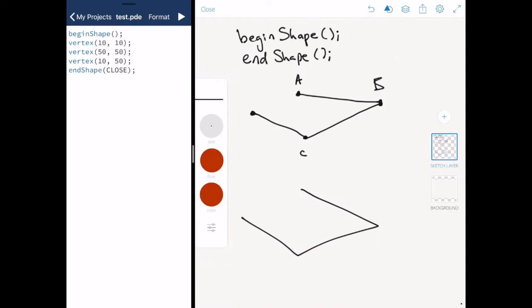If we want to draw this connecting line at the end here, although it won't be a different color that's just to show you, I can add CLOSE to the endShape function.